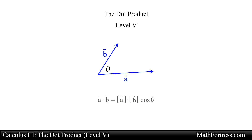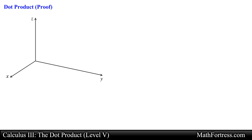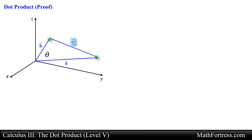Recall from the previous videos that we developed an expression for the geometric definition of the dot product. Let's go ahead and formally proof the geometric definition. Let's start by drawing vector A and vector B tail to tail at the origin of a three dimensional coordinate system. Let's call the angle between the vectors theta. Next let's draw a vector that starts from the head of vector B and ends at the head of vector A. Let's call this vector vector C.